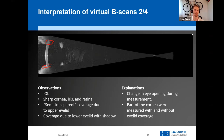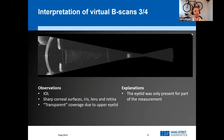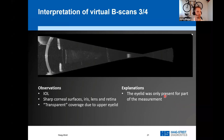What are the explanations for these features? They can be explained by a change in eye opening during the measurement — therefore, parts of the cornea were measured both with and without eyelid coverage. Here's the third example: again, we observe a sharp cornea, iris, and retina, and again we see some kind of transparent coverage due to the upper eyelid.